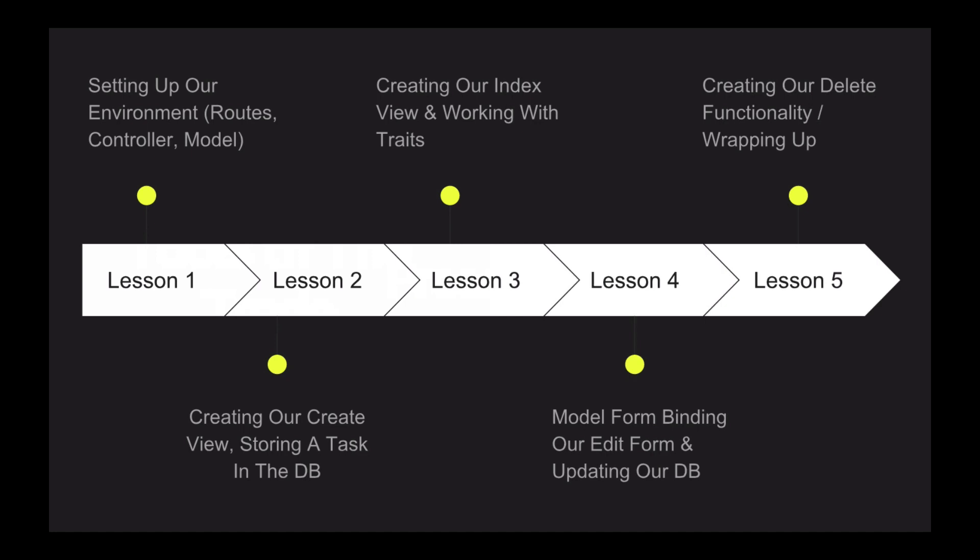So lesson three, we're going to create our index view so that way we can list all of our tasks. And we're also going to be working with traits and timestamps in particular. So that means whenever you create a task, instead of it saying created on July 31st, 2018 at 5:30 PM, it'll say created at two seconds ago or 10 minutes ago or a week ago. So that's what lesson three is going to be about.